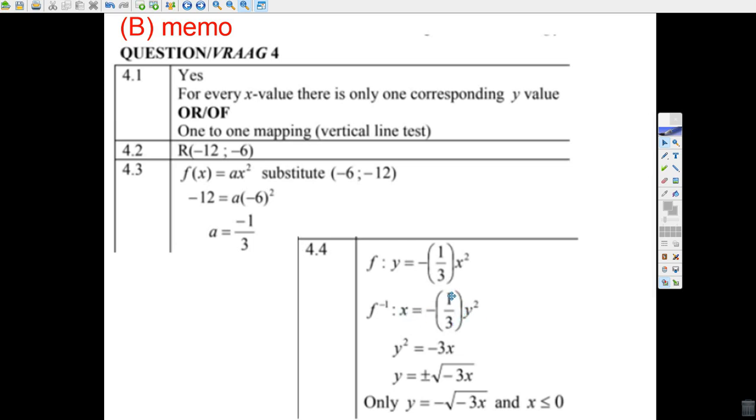Now we want to make y the subject. We multiply both sides by negative 3. It cancels here. You get just y squared. Now you've got y squared equals minus 3x. You take the square root of both sides. The square root of y, there's always two answers when you take the square root. The plus and the negative answer of minus 3x. That's your inverse function.